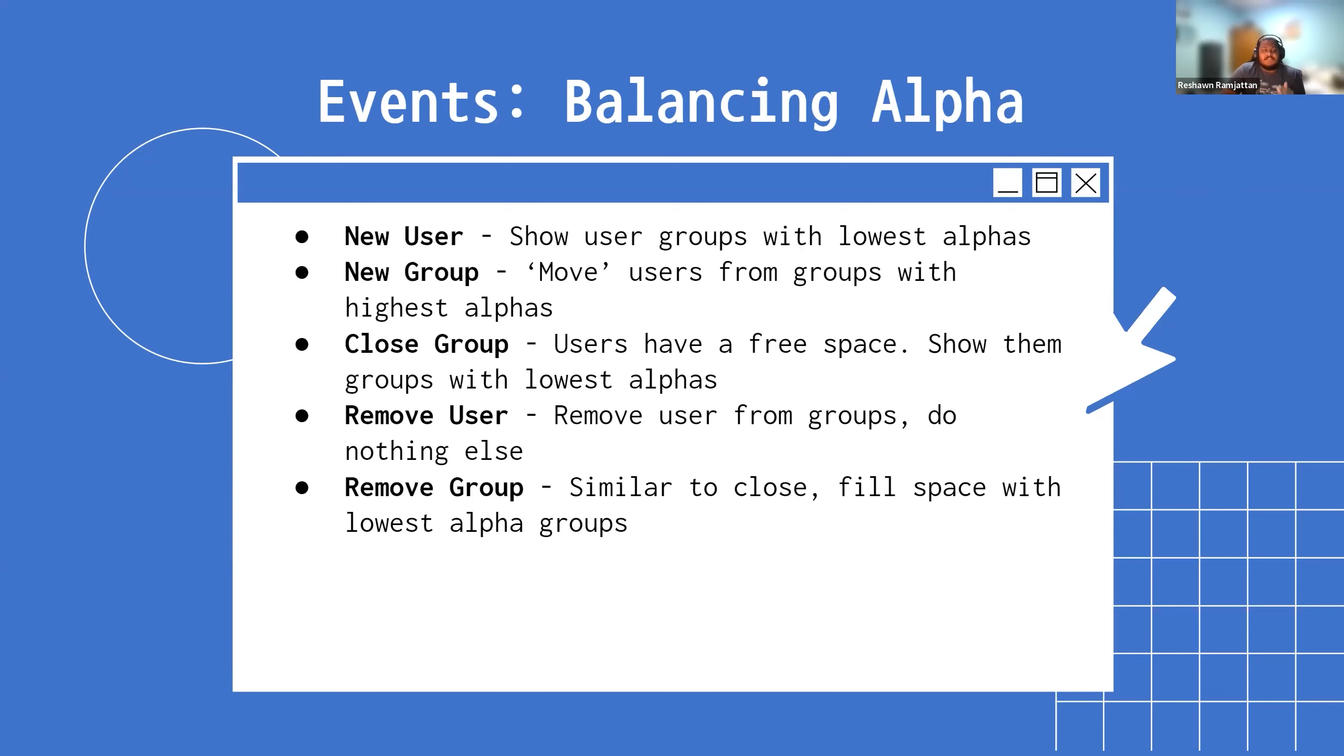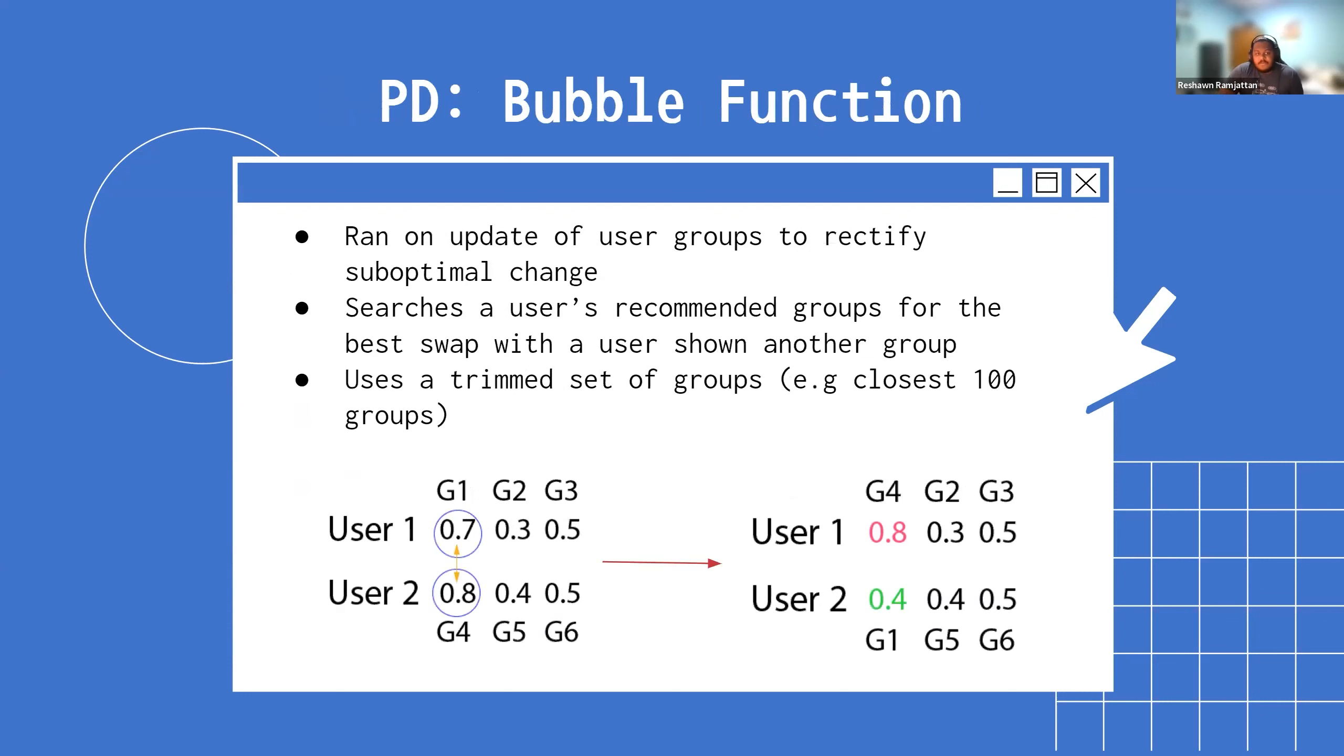With regards to balancing the alpha, these are the five events or suboptimal changes that can occur. For example, if a new user joins, then our rectifying change should be you will show that person the groups that need people. Now it's important to note that their initial experience won't really be affected here because as you'll see, we immediately handle the matchmaking quality afterwards. This is just about making sure the right or ideal number of people are seeing the groups. It's only about the number here.